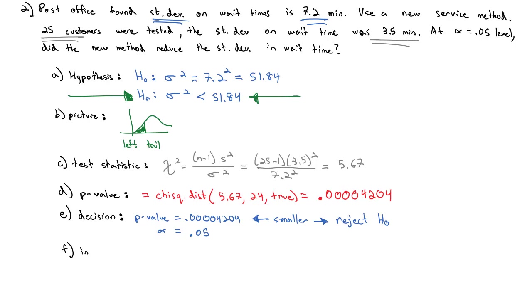Our interpretation always focuses on the alternative hypothesis, which we successfully showed. There is significant evidence at the α = 0.05 level that σ² is less than 51.84. Putting that in context, the standard deviation of wait time went down using the new service method.